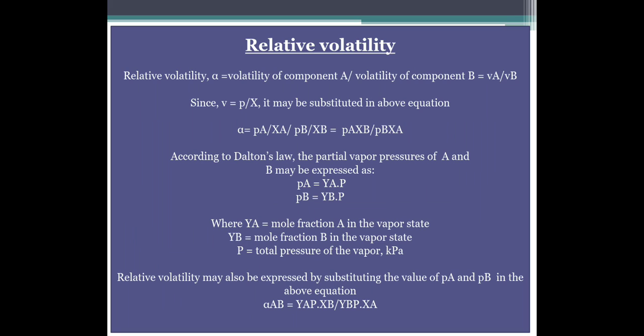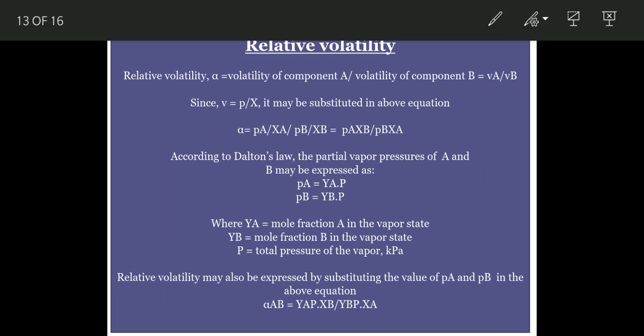Relative volatility, denoted by alpha (α), is the volatility of component A divided by the volatility of component B. So you are calculating the volatility of components A and B, and you divide volatility of A by volatility of B: α = Va / Vb. This gives you the relative volatility.